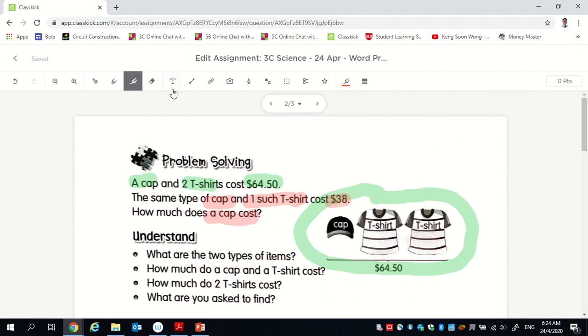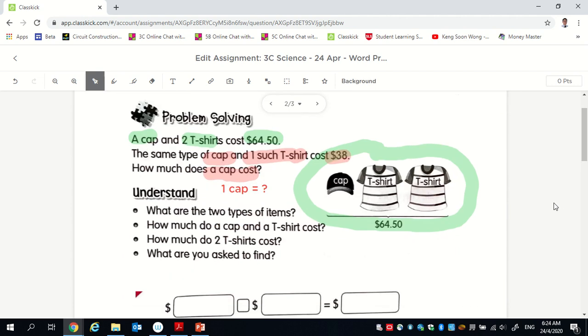Let's use a different color. So one cap, one t-shirt, $38. How much does one cap cost? So I want to know how much is one cap. So the question, let's draw in what is given. I have this. So I know there is two t-shirts and one cap cost $64.50. Let's draw in this statement. One cap, one t-shirt is $38. So let's draw in one cap, one t-shirt. This is $38.